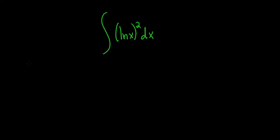We have the integral of the natural log of x squared solution. So the natural thing to try is to let u be equal to the natural log of x. Then we can compute du, so du is 1 over x dx.